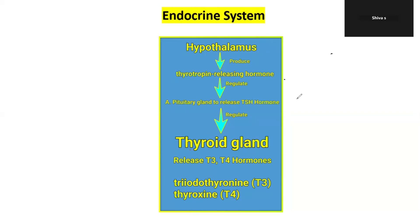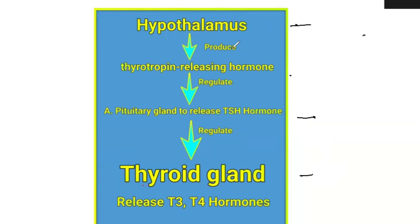Now we are discussing the thyroid gland hormones. The thyroid gland is stimulated by the pituitary gland, and the pituitary gland is stimulated by the hypothalamus. First, the hypothalamus produces thyroid releasing hormone (TRH). The hypothalamus is a part of the brain.